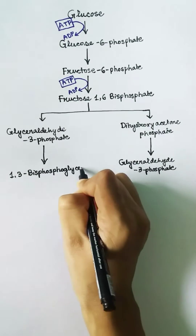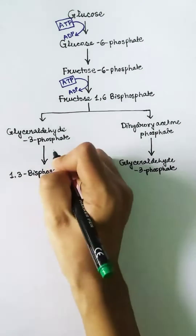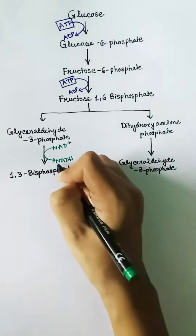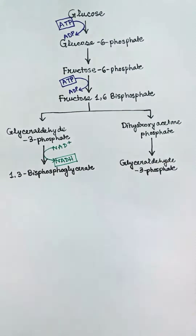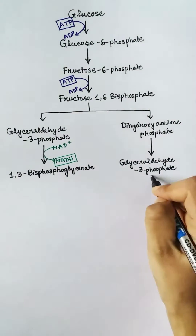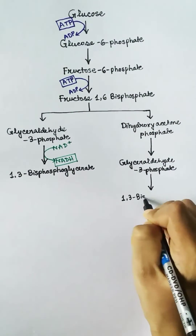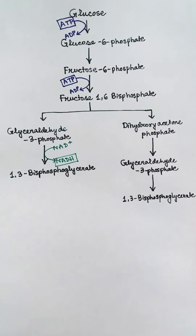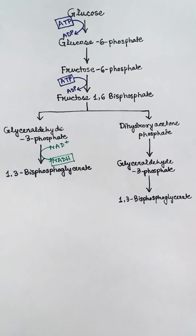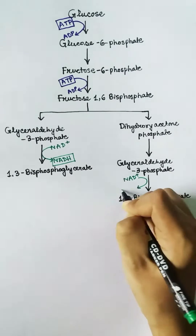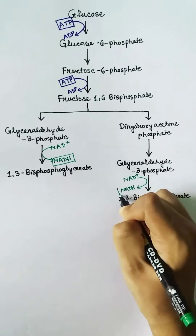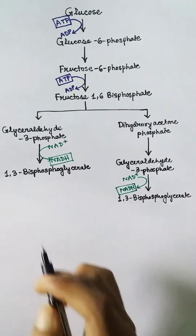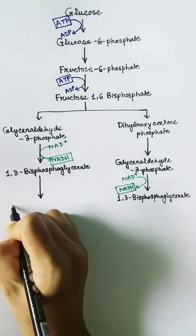In the glycolysis pathway, two molecules of NADH are produced. One NADH is produced during the conversion of glyceraldehyde-3-phosphate into 1,3-bisphosphoglycerate, so from the two glyceraldehyde-3-phosphate molecules we get two NADH total. Now it is time to produce the ATPs.